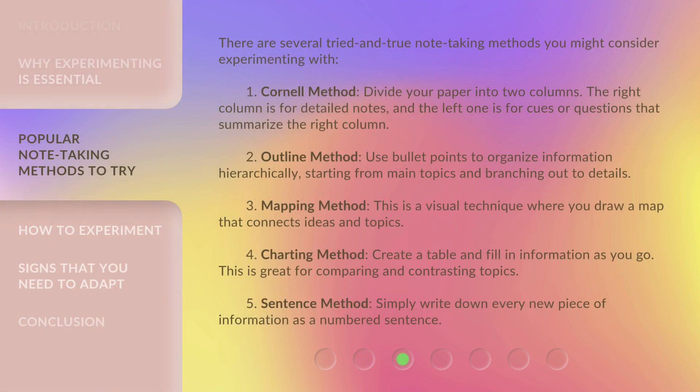There are several tried-and-true note-taking methods you might consider experimenting with. First, the Cornell Method: divide your paper into two columns. The right column is for detailed notes, and the left one is for cues or questions that summarize the right column.